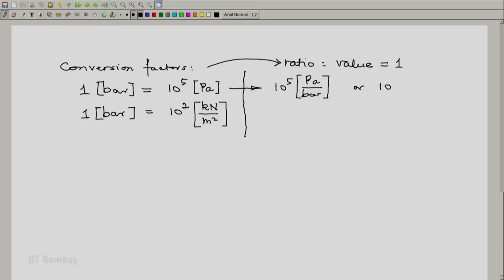Or we can convert it the other way: 10⁻⁵ bar per Pascal. This can also be converted to 10² kilo Newton per meter square per bar.